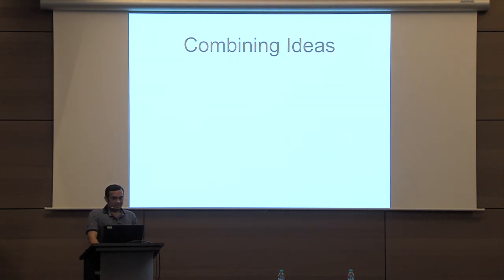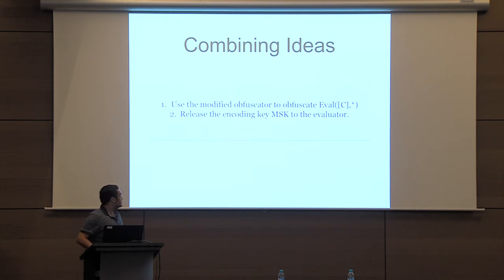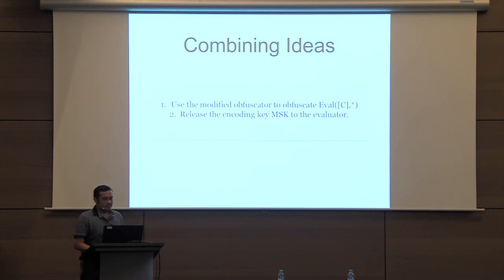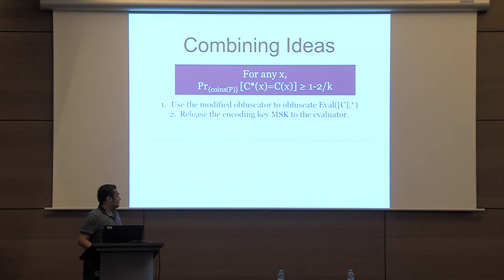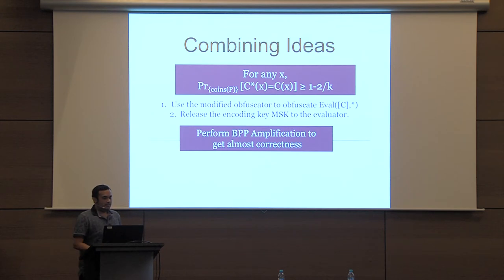We combine these ideas: instead of obfuscating circuit C directly, we use the modified obfuscator on the evaluate circuit of the garbling scheme hardwired with the garbled circuit [C], and release the encoding key (MSK) of the garbling scheme to the evaluator so he can compute the obfuscation at any point. With this transformation, for any input X, C*(X) = C(X) with probability at least 1 - 2/λ over the coins of the obfuscator. Standard BPP amplification then yields almost full correctness.